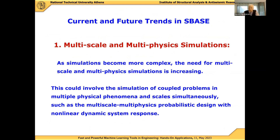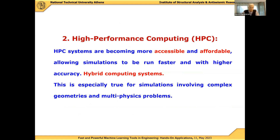As simulations become more complex, the need for multi-scale and multi-physics simulations is increasing. This involves the simulation of coupled problems across multiple physical phenomena and scales simultaneously — such as the multi-scale, multi-physics, probabilistic design with non-linear dynamic response mentioned previously. The second trend is high-performance computing. HPC is becoming more accessible and affordable, allowing simulations to run faster and with higher accuracy. Hybrid computing systems incorporating shared memory machines together with GPUs are an answer to accessible and affordable computing, especially for simulations involving complex geometries and multi-physics problems.